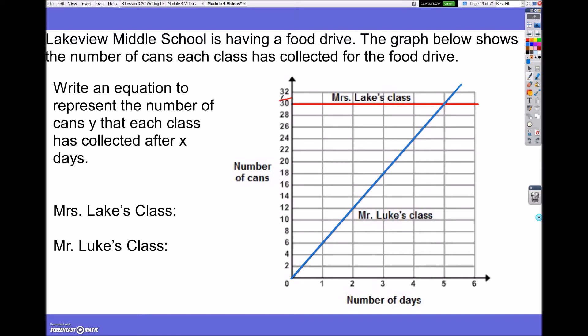So, in this example, no matter what my x value is, my y value is always 30, which means someone on the very beginning of the competition gave 30 cans, or they just had 30 cans in the classroom to begin with, and they never got any more. So, this equation for Mrs. Lake is y equals 30. So, throughout the competition, it doesn't matter how many weeks passed, they always had 30 cans.